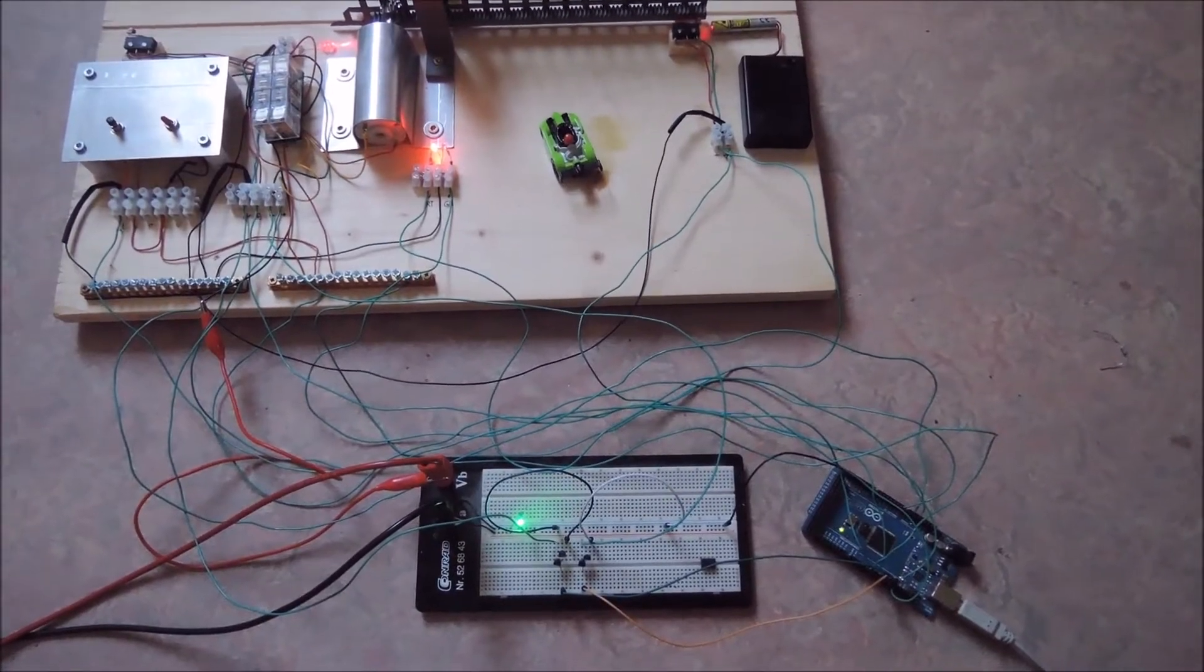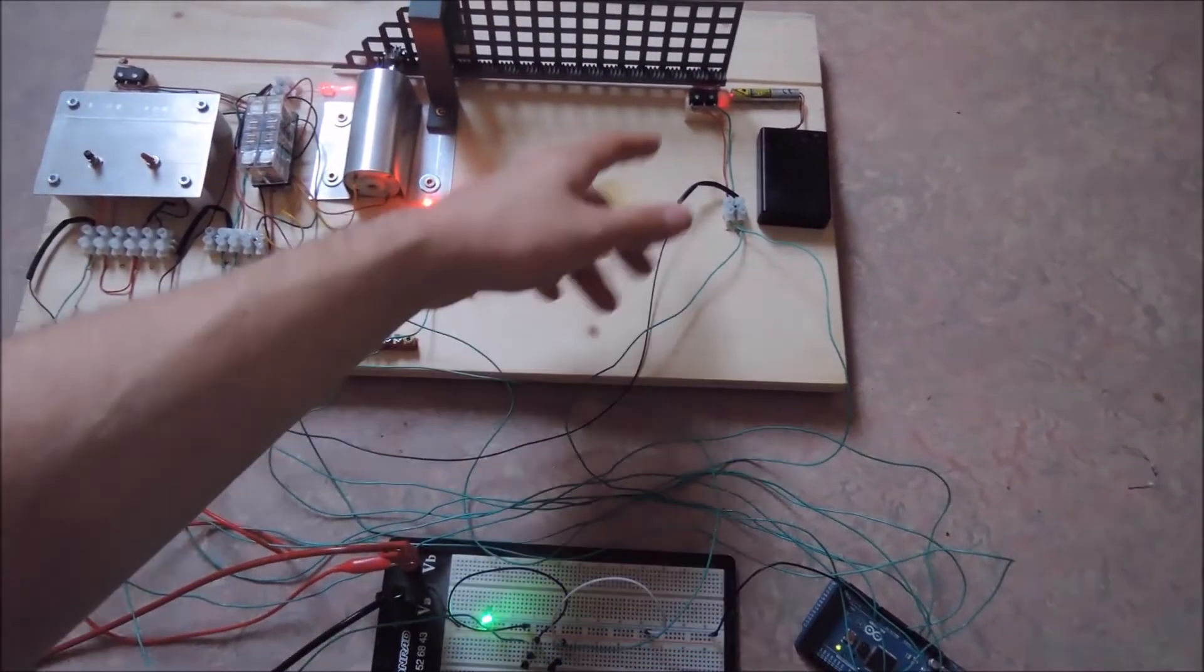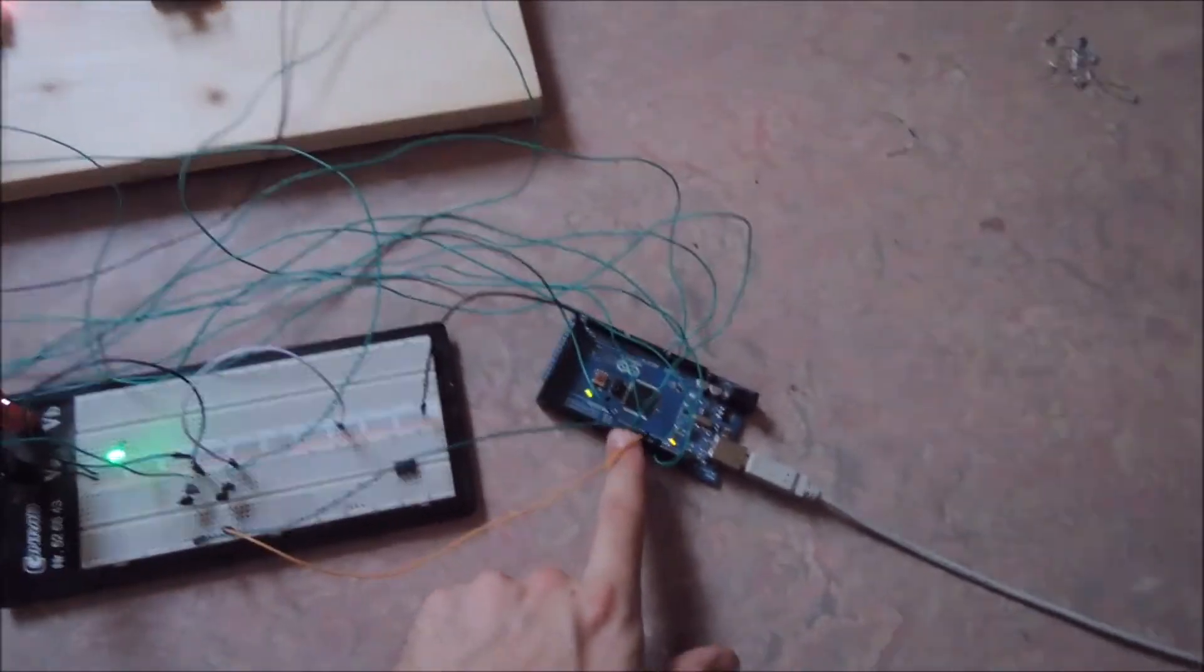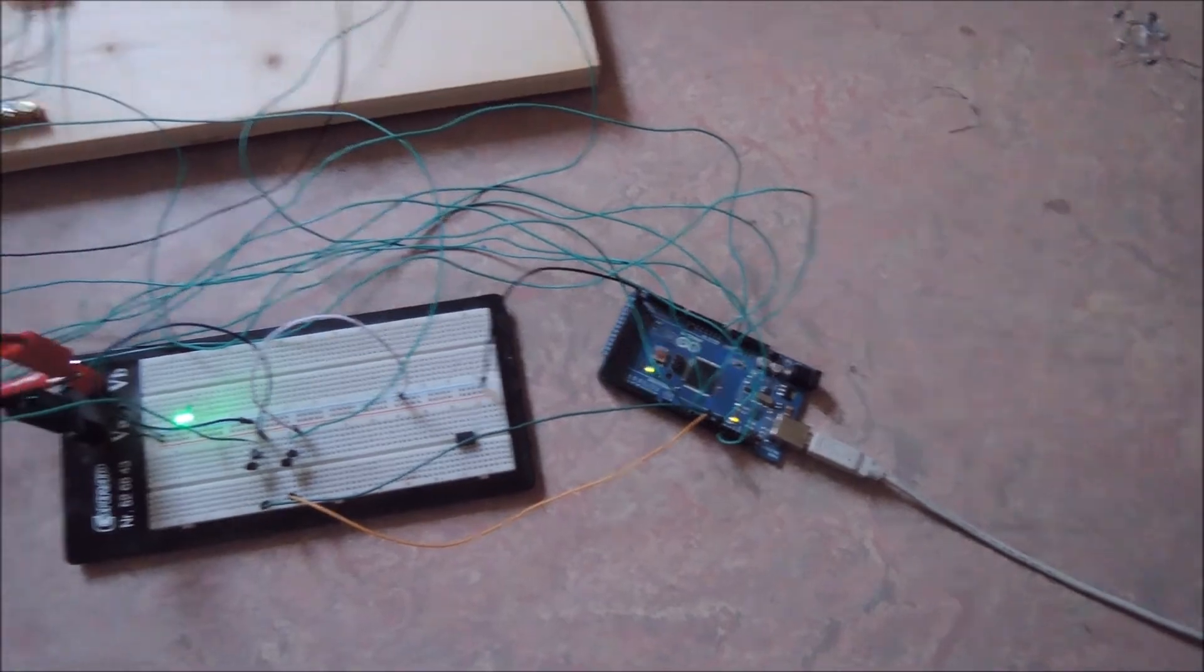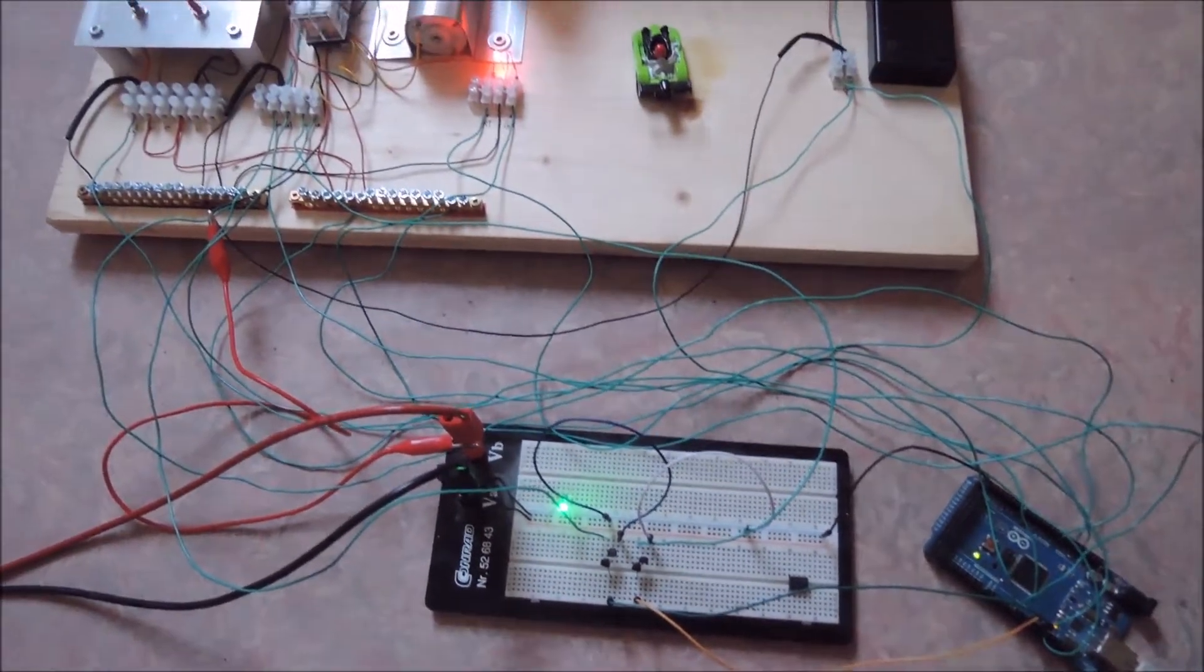This is the microcontroller version of the same build with the same car and the same light barrier. The only difference is the Arduino microcontroller here, and the green LED shows the 12V power supply for the relays.